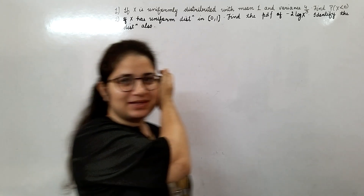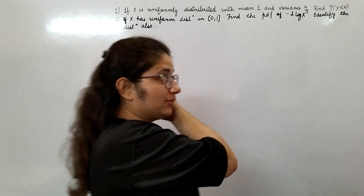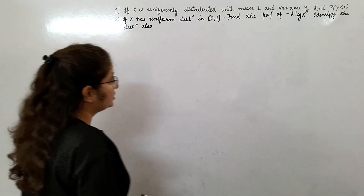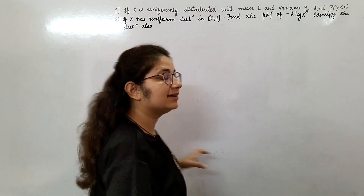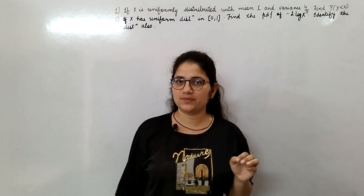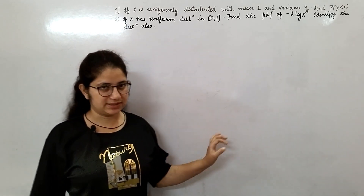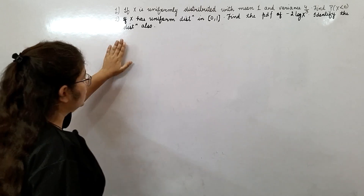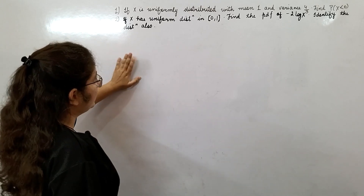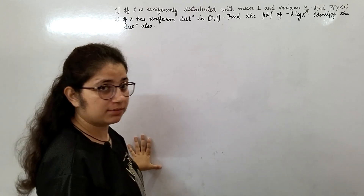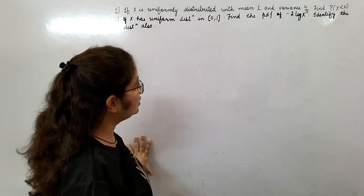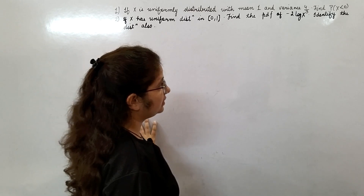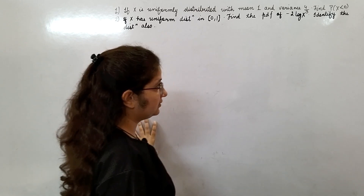Welcome back students, we will continue our uniform distribution. In this video we will do two questions based on uniform distribution. First question: X is uniformly distributed with mean 1 and variance 4/3.